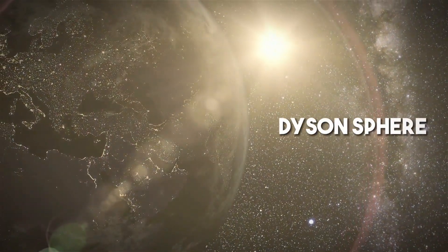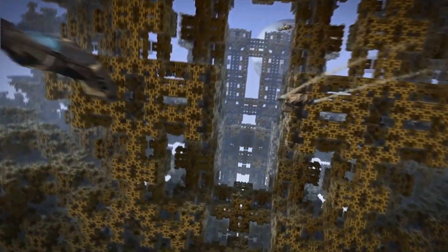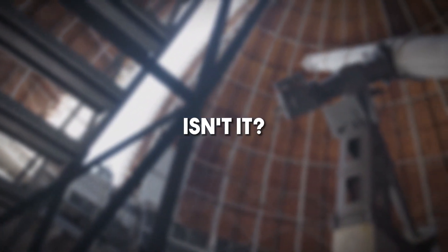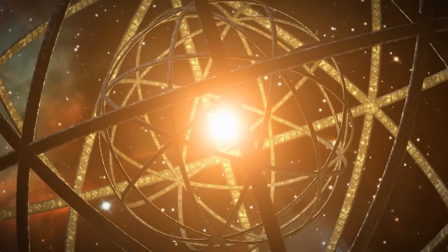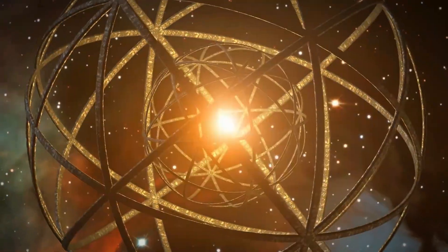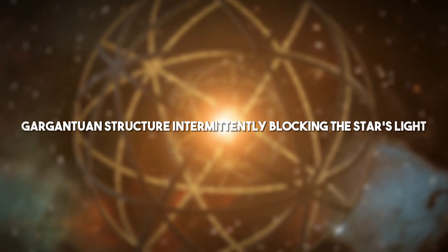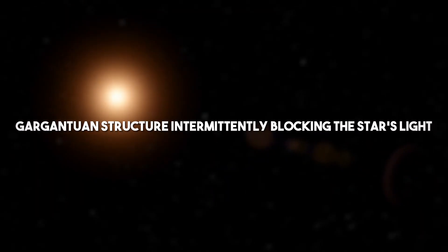This structure, known as a Dyson sphere, is designed to harness and utilize the full energy potential of the star. It's a captivating idea, isn't it? This theory suggests that the unusual dimming patterns could be the result of such a gargantuan structure intermittently blocking the star's light.